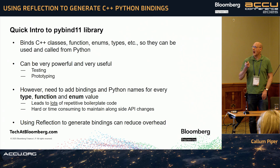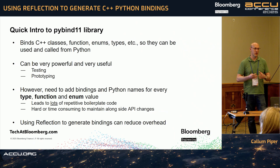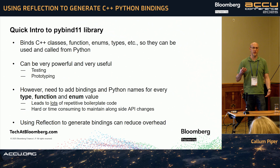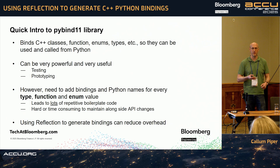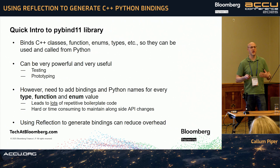PyBind 11 binds classes, functions, enums, types, et cetera, so they can be made available in Python. It's powerful and useful, but you end up with a lot of boilerplate code. If you've got to bind every function in a class, every enum, every type that you're putting in your API, you can end up with a lot of binding code — even if you're just doing one line per class, one line per function, one line per type. And when the API changes, you've got to modify all of this, so it can be time consuming to keep up to date.